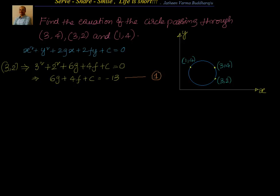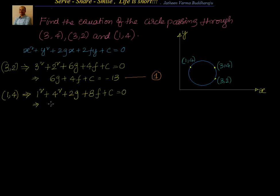Now let's move to the second point. We will take (1,4). Substituting x=1, y=4 gives 1 + 16 + 2g + 8f + c = 0, which simplifies to 2g + 8f + c = −17. That is Equation 2.